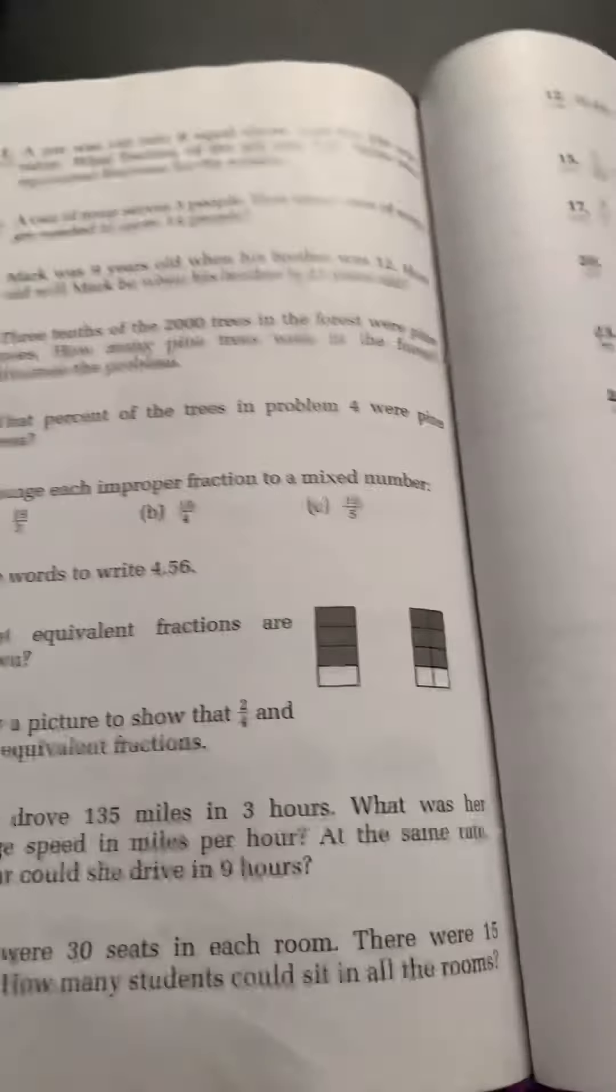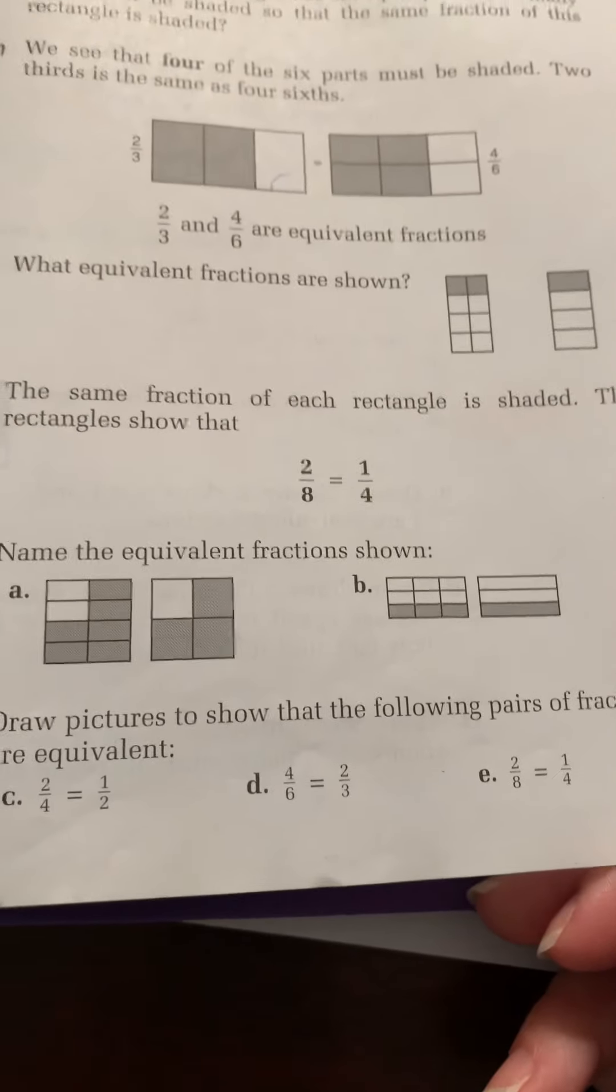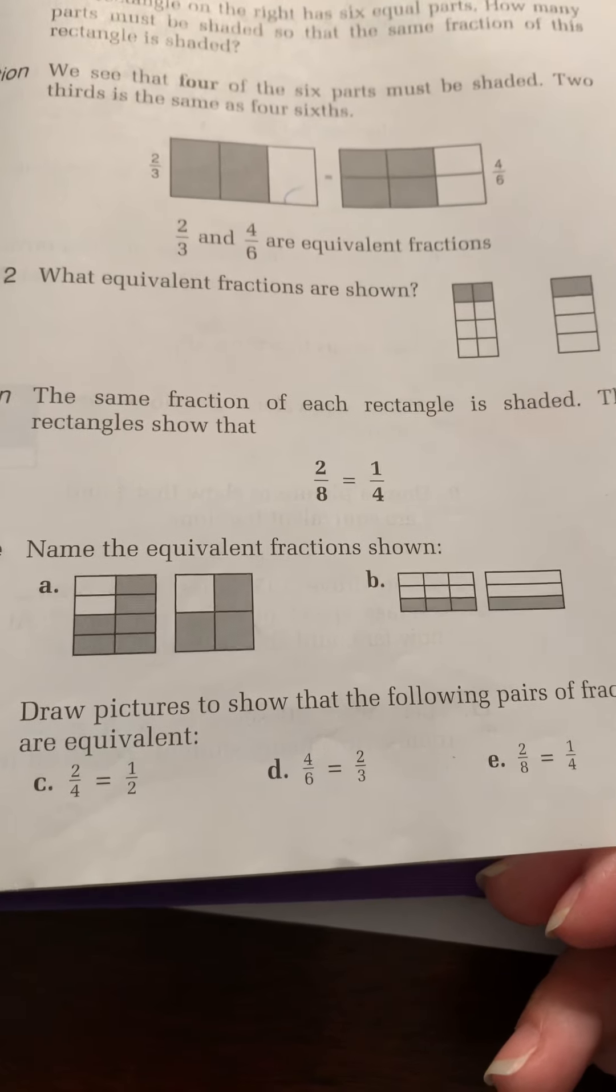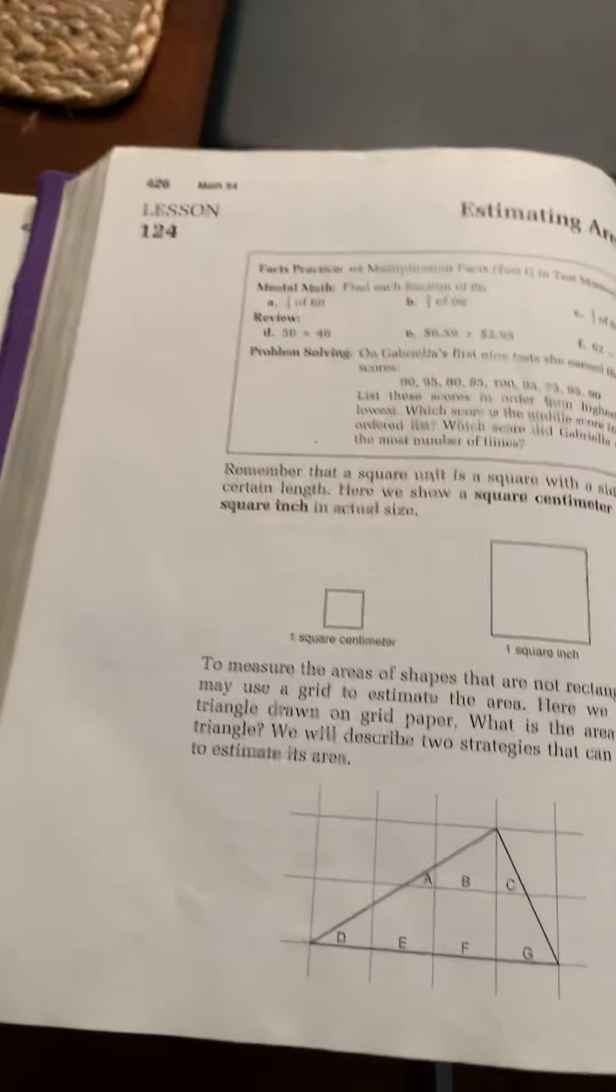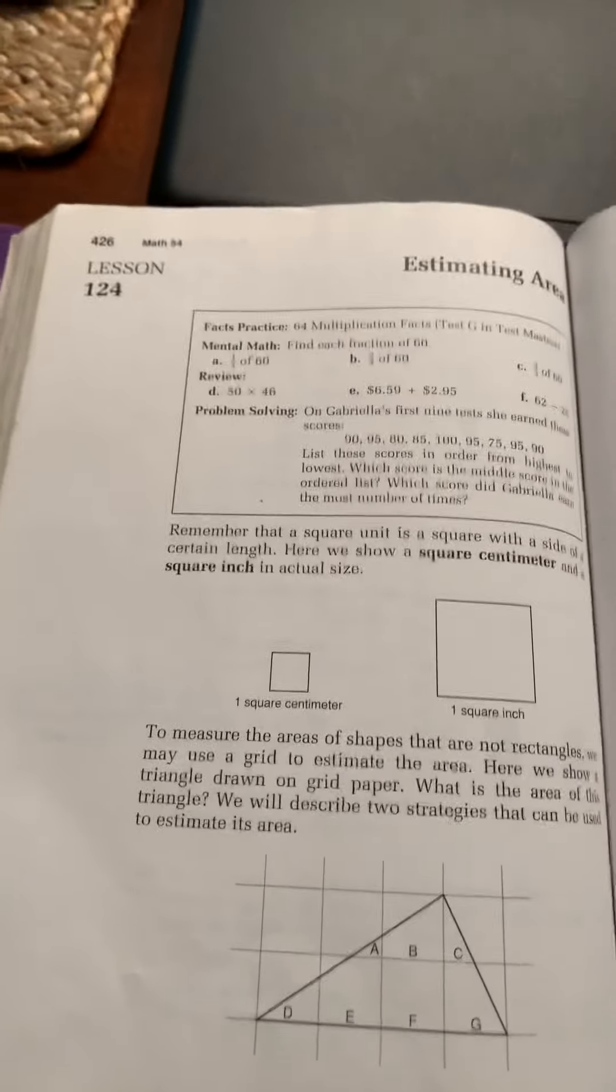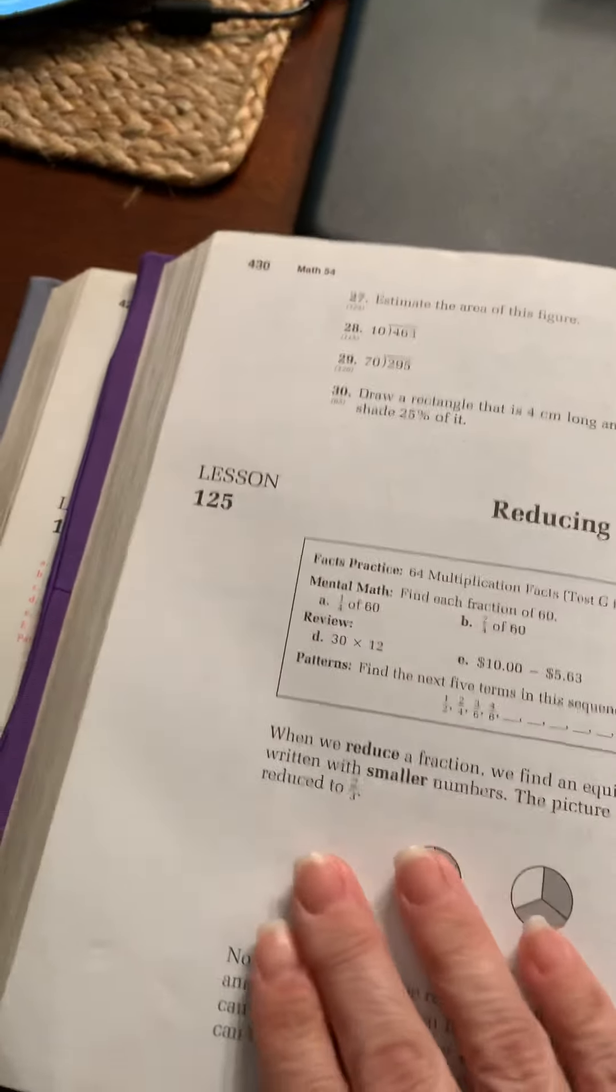And so that is all of lesson 123. There are the practice problems at the bottom if you want to look over those. And then we're going to skip 124, estimating area. You're welcome to read through it and look over that, but I'm going to skip it for right now.